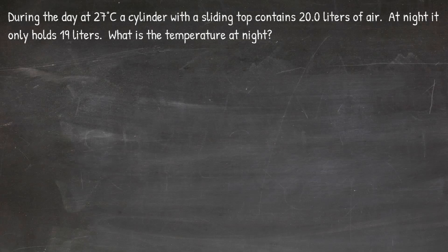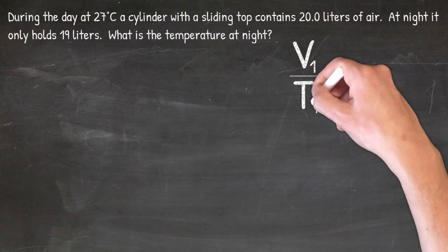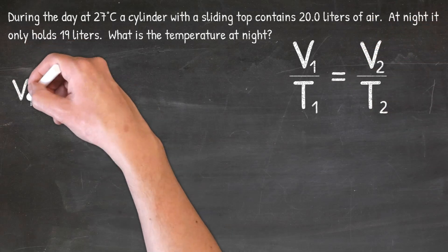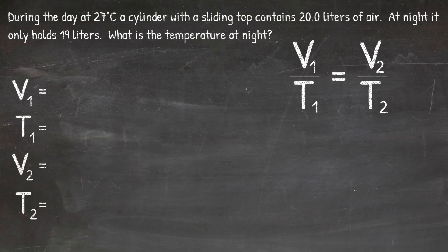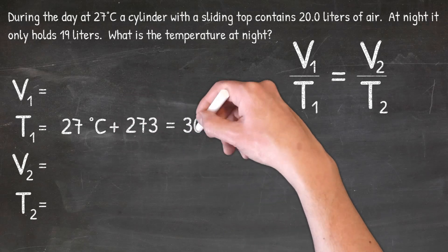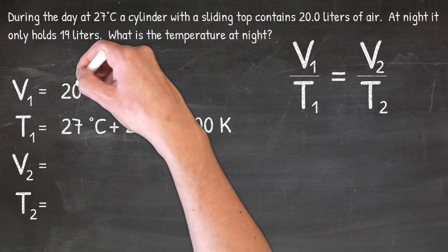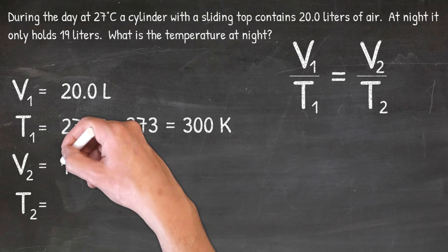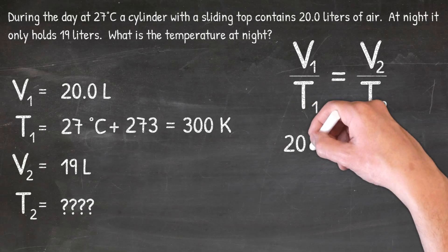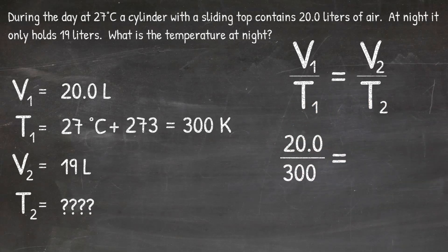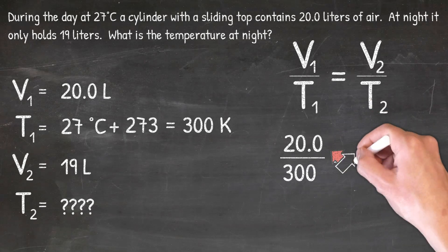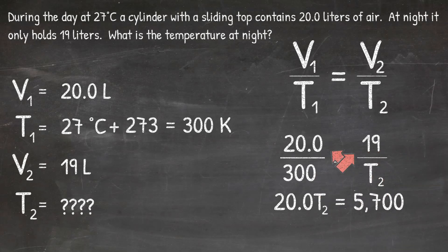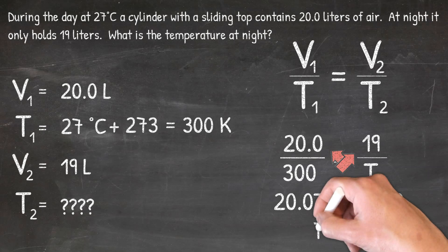When I look at this problem, I'm given 27 degrees Celsius, which is temperature, and then 20 liters and 19 liters, which is volume. Because I'm given volume and temperature, I'm going to use the formula V1 over T1 equals V2 over T2. I'll plug in 27 degrees Celsius for T1, then convert that to Kelvin by adding 273 to get 300 Kelvin. I'll then plug in 20 liters for V1 and 19 liters for V2, which shows me I'm solving for T2. I'll then cross-multiply to get 20 T2 equals 5,700. Dividing both sides by 20 gives me a T2 of 285 Kelvin.